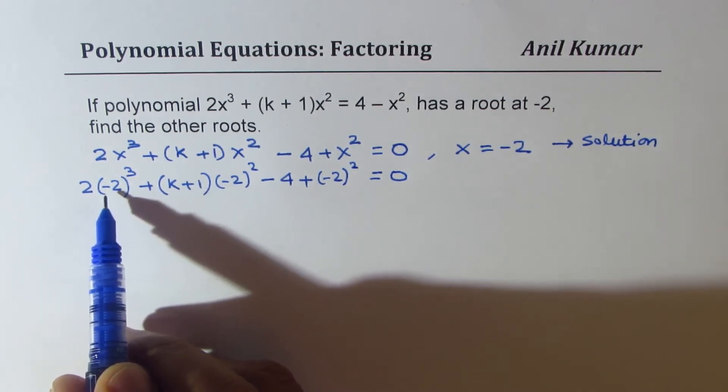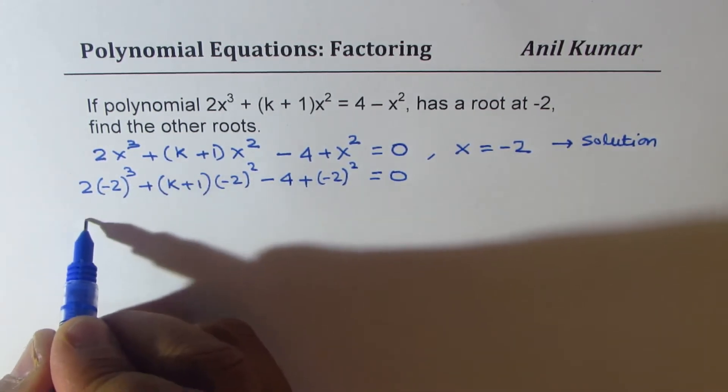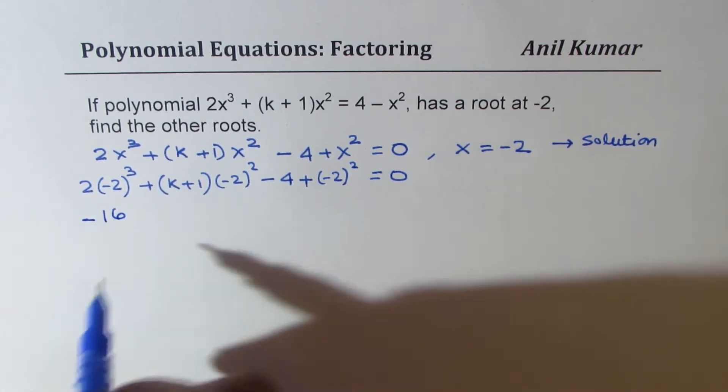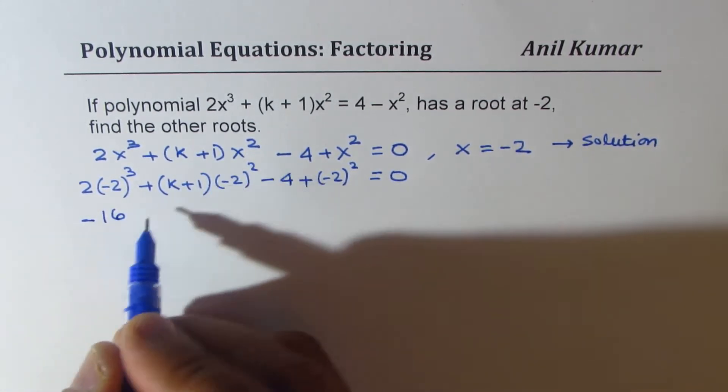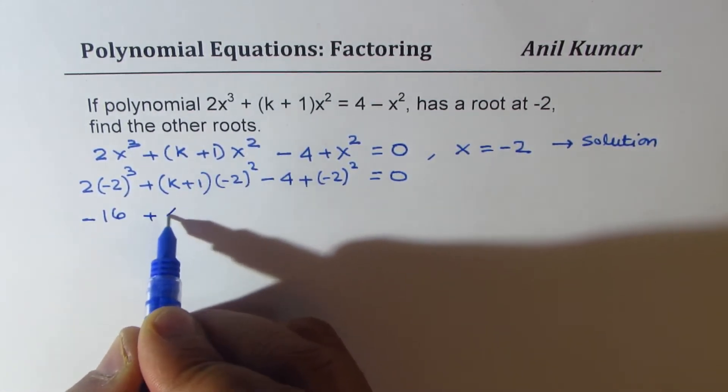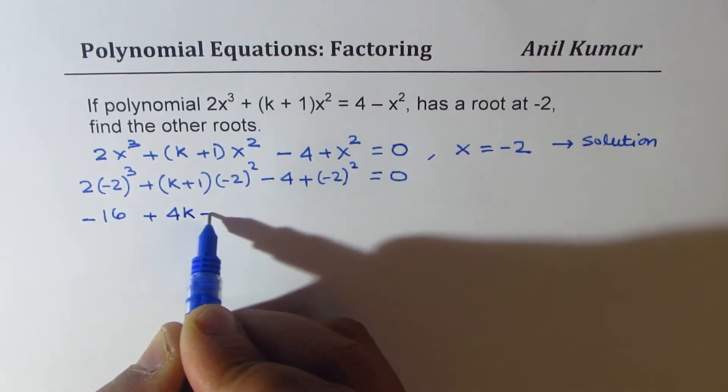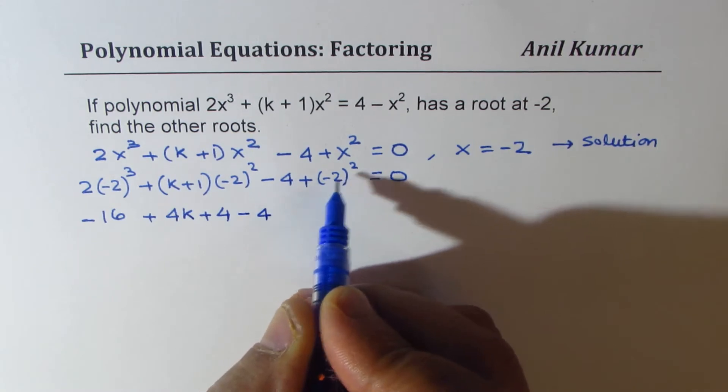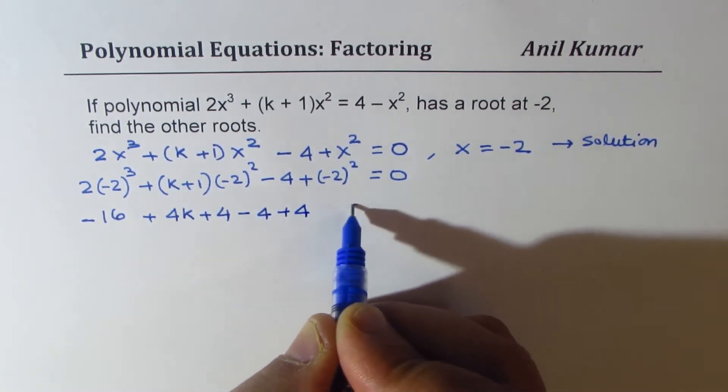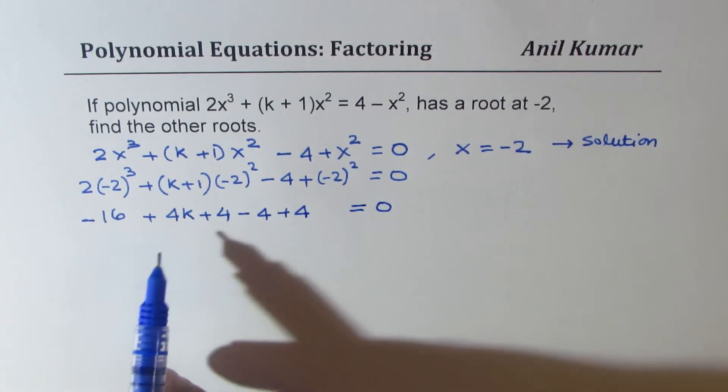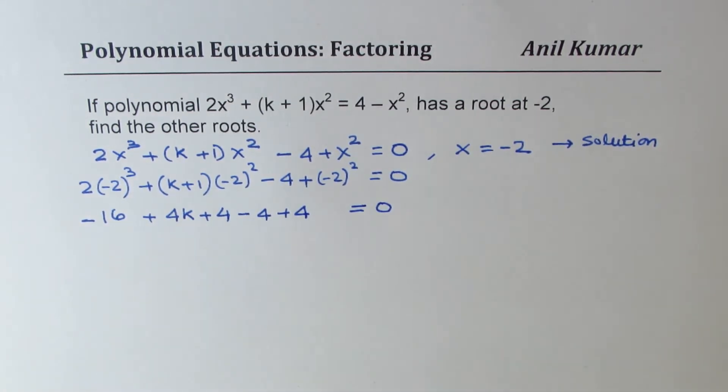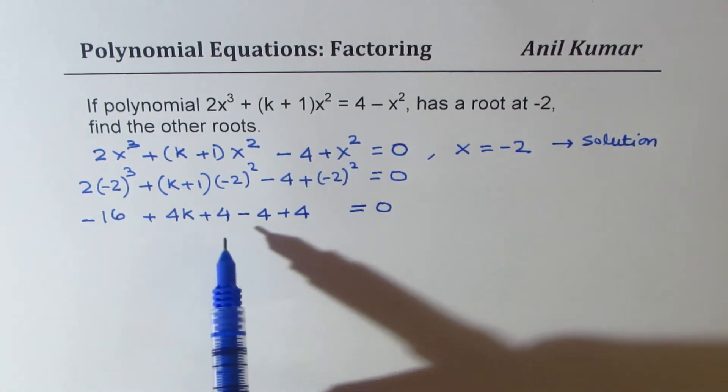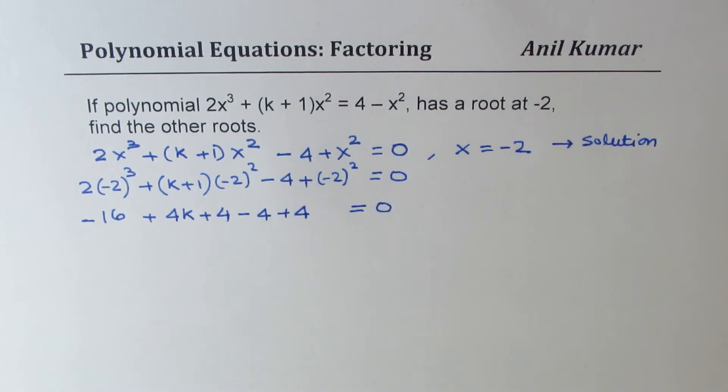-2 cube is -8 times 2 is -16. Now here we get 4. So when you open the bracket, you get 4k + 4. Then we have -4 and -2 squared is +4. We have equal to 0. So now we can find the value of k. So let's calculate this.